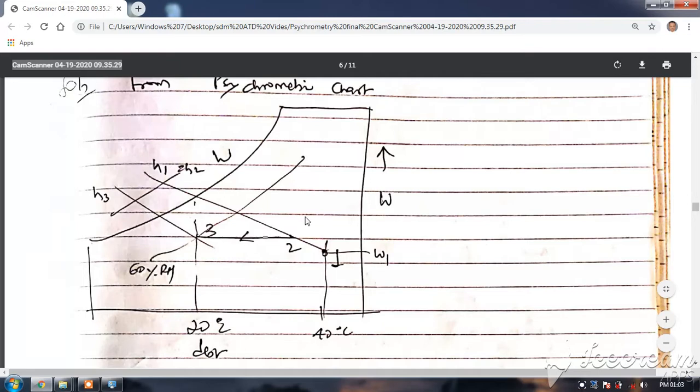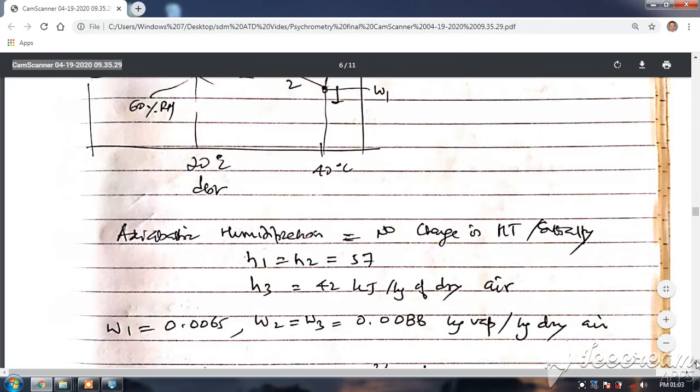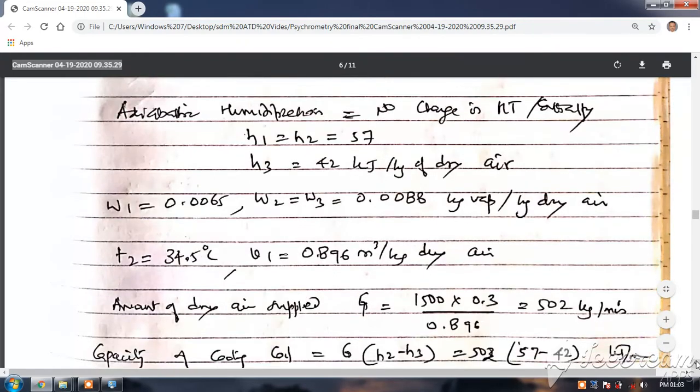Now enthalpy you can find out. Enthalpy of 2-3: h1 is equal to h3. This is adiabatic humidification. You can see adiabatic humidification which means there is no change in enthalpy. The enthalpy of 1-2, of 2 is 57, enthalpy of 3 is 42 kilojoules per kg.